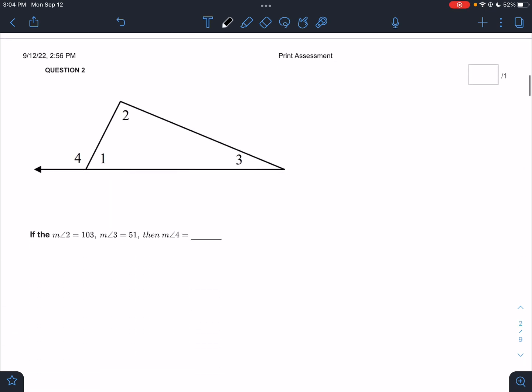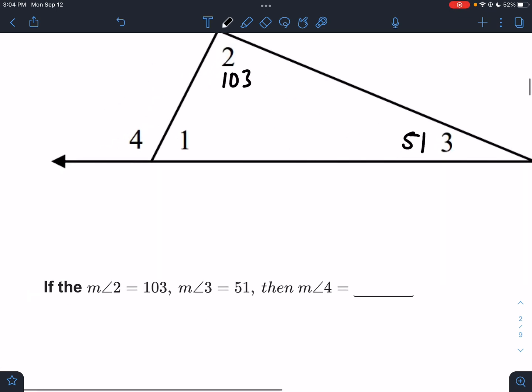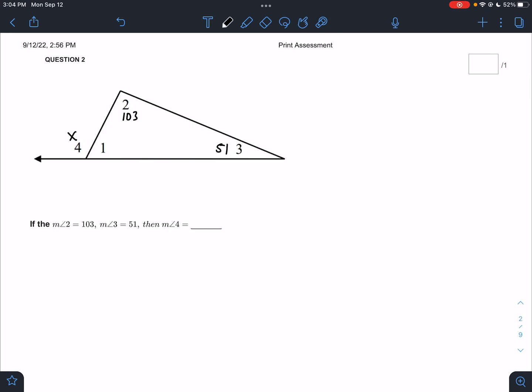Next question. We have the measure of angle 2 is 103 degrees, the measure of angle 3 is 51 degrees. Find the measure of angle 4. Since I don't know what, I'm going to call it x. Our rule that we just learned is that remote plus remote equals exterior. These are the two remotes for angle 4 there. So I would say that 103 plus 51 has to equal x, so that would be 154. It's not the only way to do it, but that's the way to do it using our new rule.